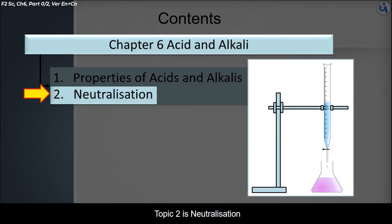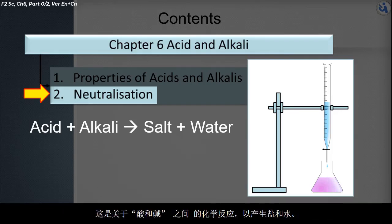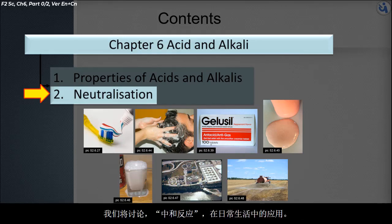Topic 2 is Neutralization. 主题二是中和反应。This is about the reaction between acid and alkali to produce salt and water. 这是关于酸和碱之间的化学反应，以产生盐和水。At the end of the chapter, we will discuss the application of neutralization in daily life. 在本章的最后，我们将讨论中和反应在日常生活中的应用。